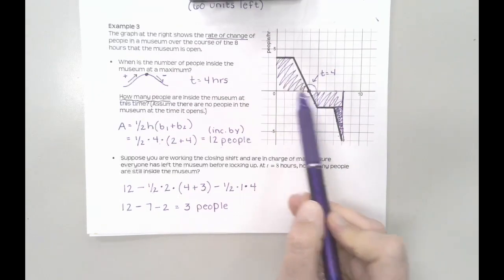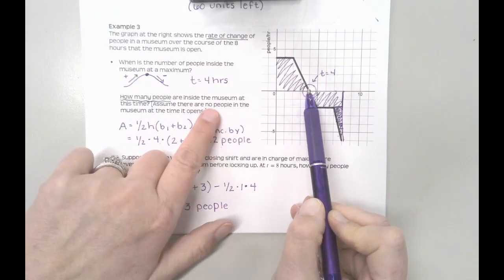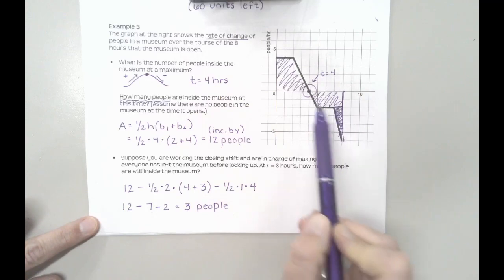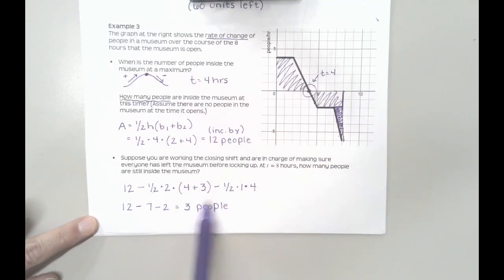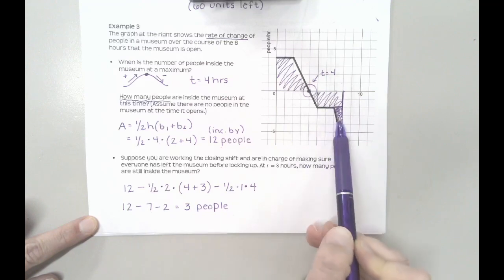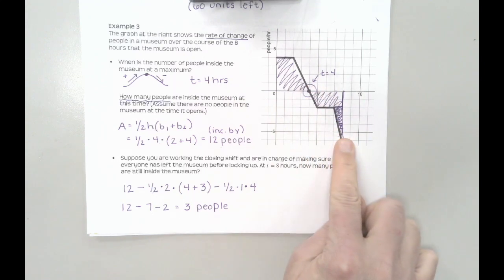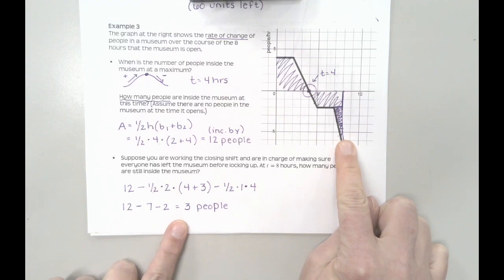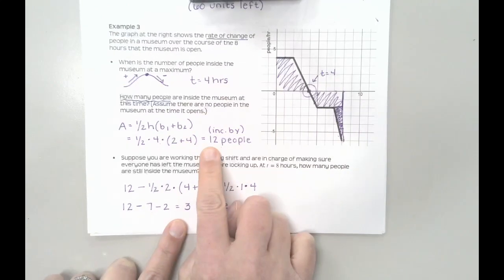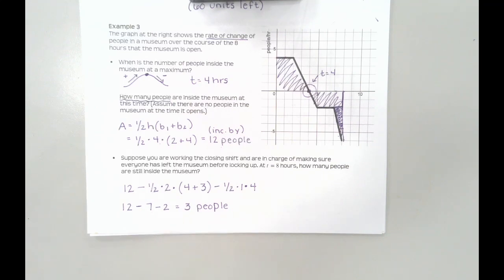Just to recap: from 0 to 4, the number of people in the museum increased by 12. Since we're assuming there was no one inside, that means there were 12 people. From 4 hours to 8 hours, I lost 9 people total because this section has an area of 7 and this has an area of 2. So I lost 9 people altogether, and there must still be 3 people hanging around. It's really important to understand that just because this graph is in the negative doesn't mean the number of people has turned negative — this just means my number of people started decreasing. 12 was my maximum, and then it started shrinking after that, dropping down to 3 people by the end of the 8 hours.